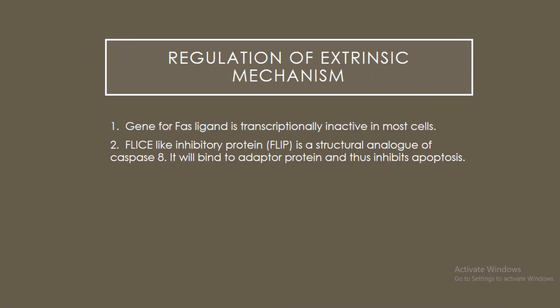Apoptosis is called genetically regulated or programmed cell death. We can justify this by noting: first, the gene for the FAS ligand is transcriptionally inactive in most cells, so most cells cannot synthesize FAS ligand as the gene remains inactive. Second, a protein called FLIP (FLICE-like inhibitory protein) is a structural analog of caspase 8 and will bind to the adapter protein, thereby inhibiting apoptosis.